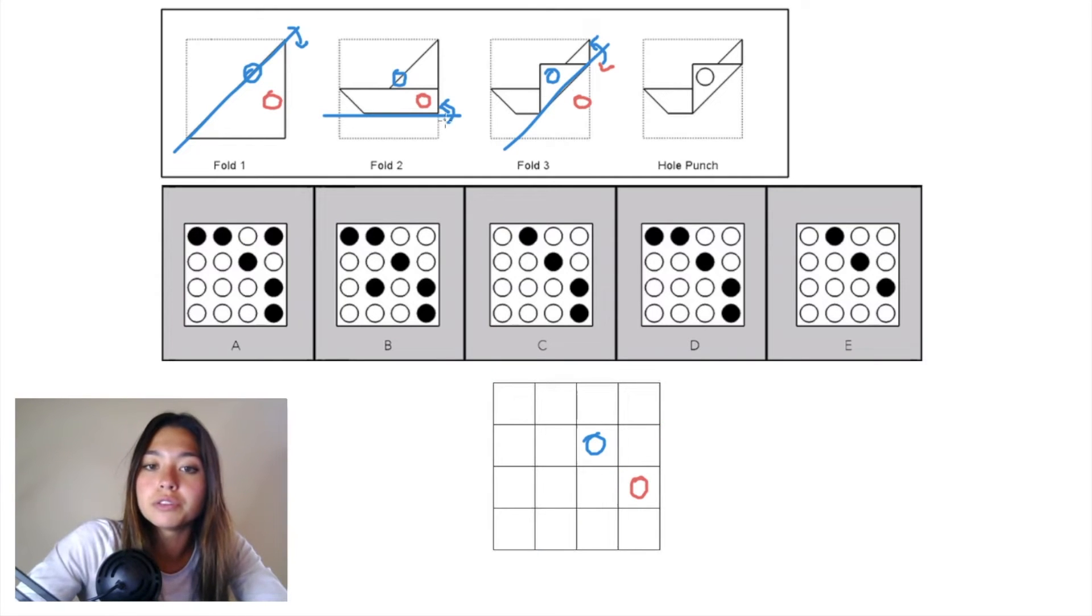Now we'll undo fold 2. The piece of paper that was initially folded up was this bottom panel, folded into this piece in green. That piece only includes that one pink hole punch,